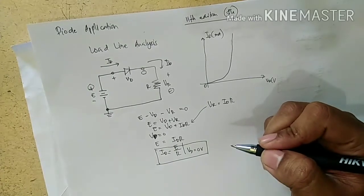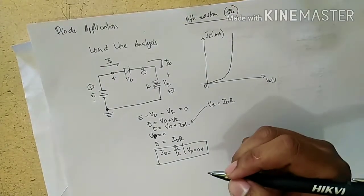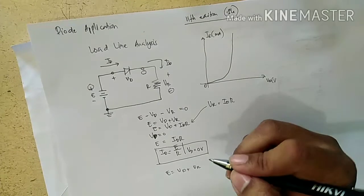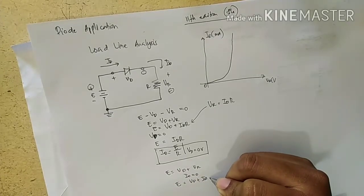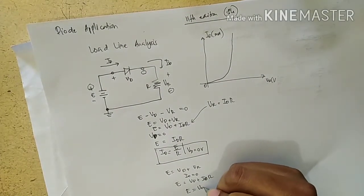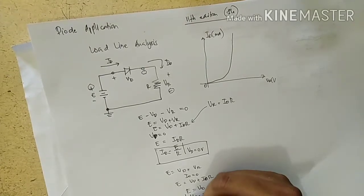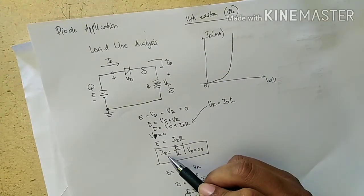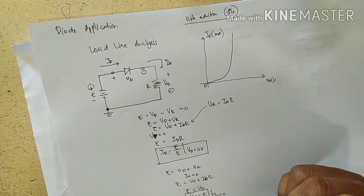So if you can calculate the maximum value of the diode current, likewise using the same formula E is equal to VD plus VR. If you let ID be equal to zero, therefore E is equal to VD plus ID times R. VD is equal to E if we let ID be equal to zero. Meaning these are the maximum points of the operation of the diode. ID is the maximum current the diode operates, as well as VD is the maximum value where the diode operates.